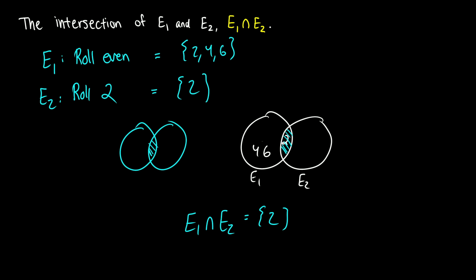Now what happens if you have events where there's no overlap — nothing in common between both events? Then we say the intersection of those two events, say E3 and E4, is equal to the empty set. This just means there is no outcome where both of those can happen simultaneously.